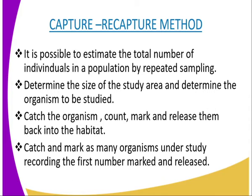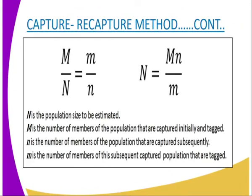After 24 hours, re-examine the experimental area and collect as many organisms as possible, including those that show the marking. Record the number of organisms collected. In the formula: capital M represents the number of members of the population that are captured initially and tagged. Capital N is the population size to be estimated — that is the total population. Small n represents the number of members of the population that are captured subsequently. Small m represents the number of members of the subsequent captured population that are tagged.